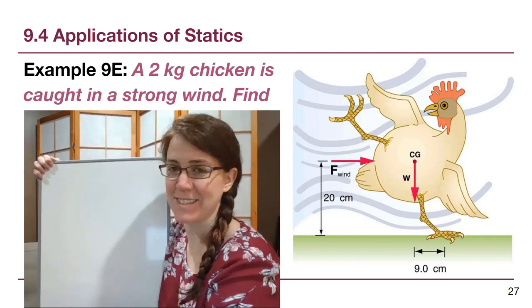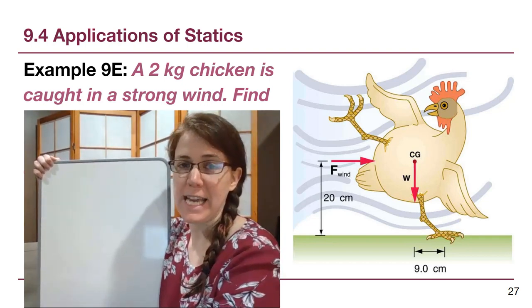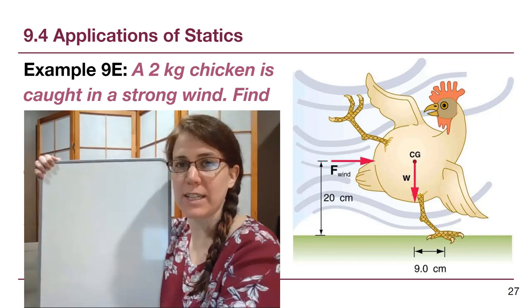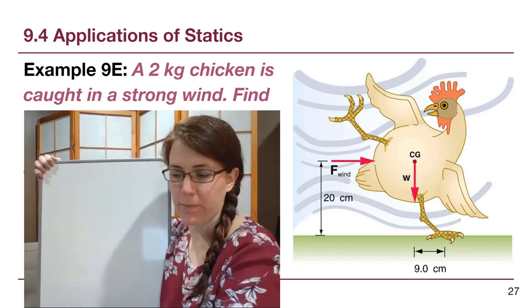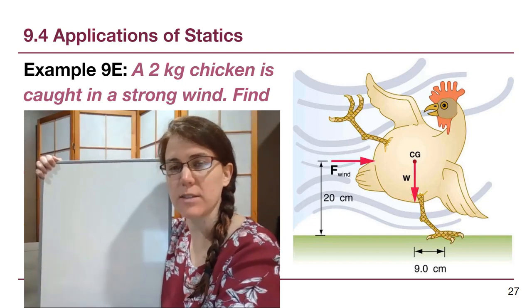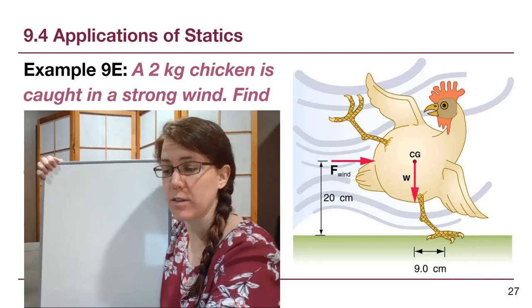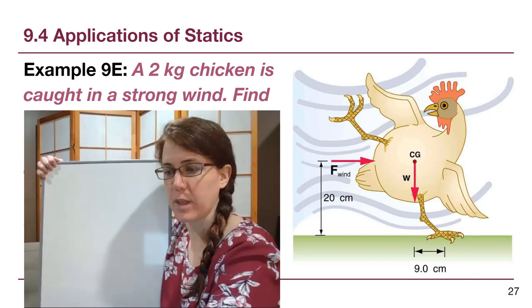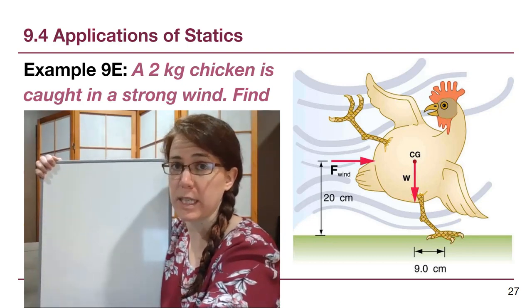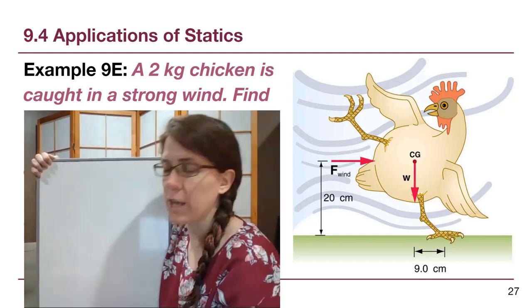We're trying to figure out the force of the wind if we assume that the wind is kind of constant and is acting at the center of the chicken's center of mass, because it's all over the chicken but the net force of the wind, just like the net force of gravity, is acting at a point.